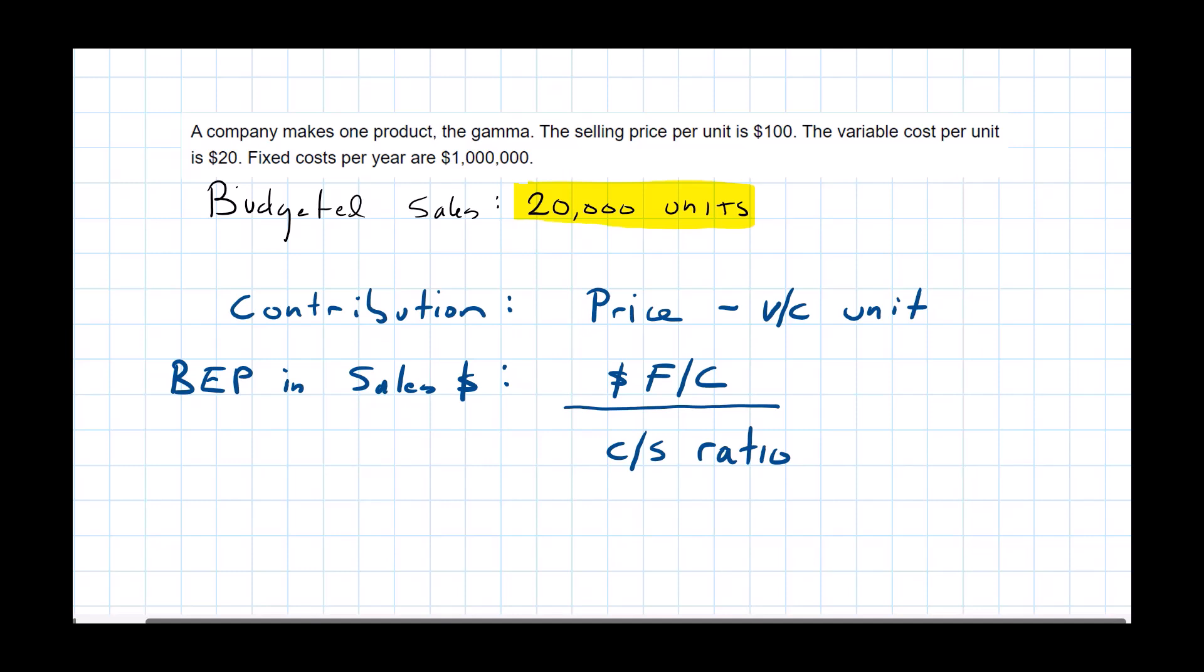And how do we calculate a CS ratio? Well, it's going to be the contribution per unit over the price. And do we have the contribution? Yes, we do. We said that was $80 over $100. That's equal to 0.8, the CS ratio, the contribution to sales ratio.